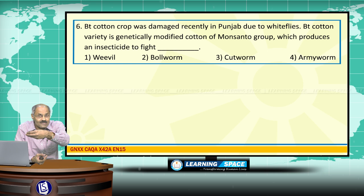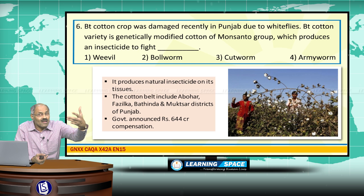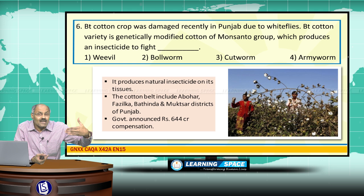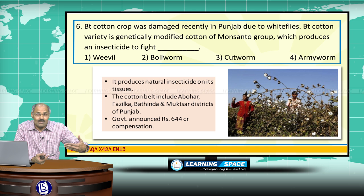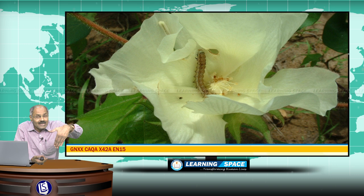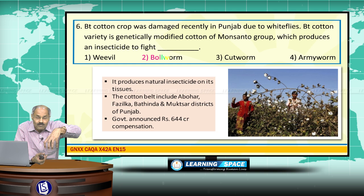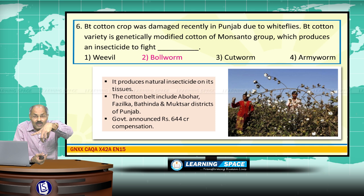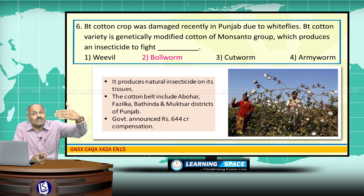Bt cotton crop was damaged recently in Punjab due to white flies. Several districts — Abohar, Bhatinda, Muktsar — were badly affected. Bt cotton is a genetically modified variety from the Monsanto group; it produces insecticide in its tissues to fight bollworm. However, it could not give protection against white flies, and because of the white fly attack, the crop was badly damaged. More than 50% of the crop was destroyed and the government announced compensation of 644 crores of rupees.